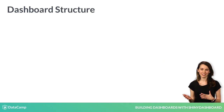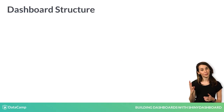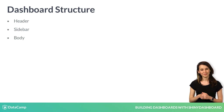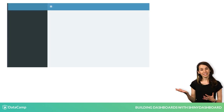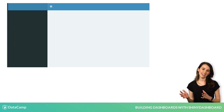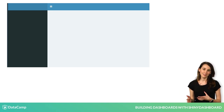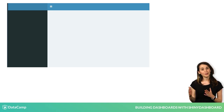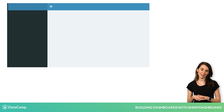The UI — user interface — of a Shiny Dashboard is comprised of three main parts: the header, the sidebar, and the body. Here's an empty dashboard. The blue bar on the top is the header, the dark blue portion on the left is the sidebar, and the gray portion in the center is the body.